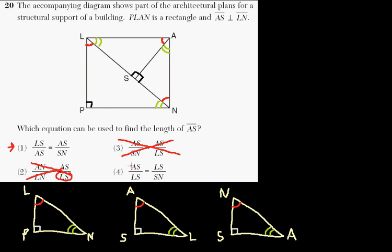And number four, it says AS and LS. So LS is here. So we're starting with this AS and then this LS. That's okay. And then it goes to LS and SN. And LS and SN don't even match up. They're not corresponding sides. So that's incorrect again for many reasons. And that is our correct answer.